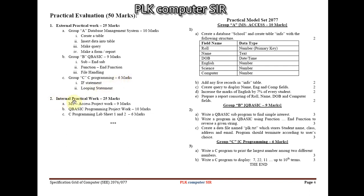For internal practical: MS Access project work carries 9 marks, Q Basic programming project work carries 10 marks, and C programming lab sheets 1 and 2 carry 6 marks — totaling 9 + 10 + 6 = 25 marks. Combined with 25 marks external, the total practical marks = 50.